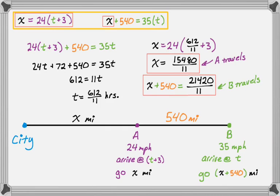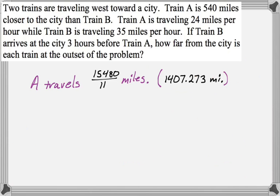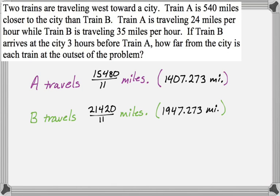So I've kind of answered the question at this point. But I always think it's a good idea to go back to the original and just make sure you write a sentence that explains what your answer is so that there's no ambiguity. So this was the original problem. And I've got A travels 15,480 over 11 miles, which is approximately 1,407.273 miles. And then B travels 21,420 over 11 miles, which is approximately 1,947.273 miles. And so we answered the question.